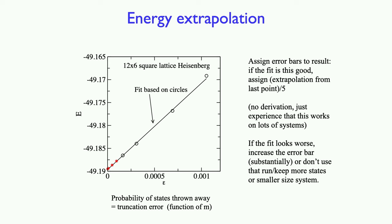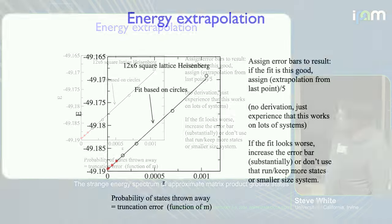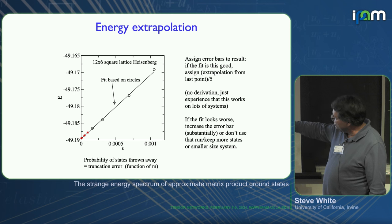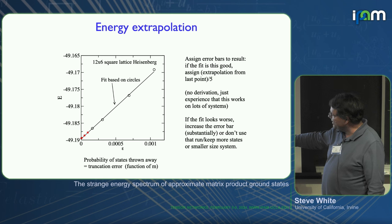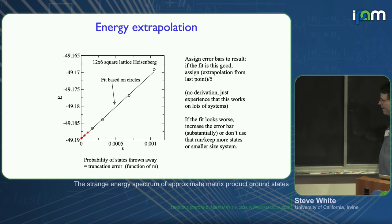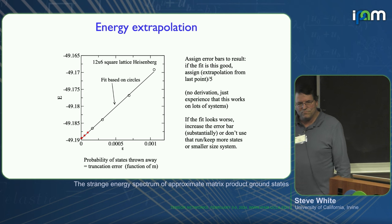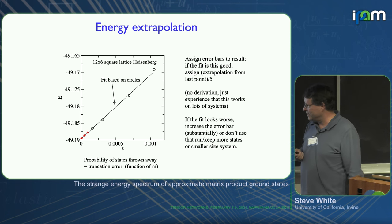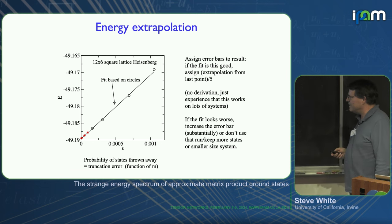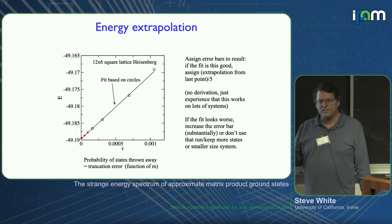Here's some real data showing a 12 by 6 square lattice Heisenberg model. It shows a fit with the circles, and the later sweeps not used in the fit fall very right on the line. We have protocols for using this. It's delicate because it depends on the history of the sweeping. For instance, if you've just increased the bond dimension by a factor of two, you'll probably find zero truncation error — and how do you extrapolate with that? So it depends on careful control of how you increase the number of states.